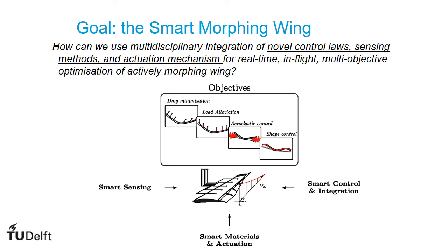The goal of this project is to advance active morphing technology for greener aviation, with Smart Autonomous Morphing Wing concept. The morphing technology is developed in the early stages of the design, such that the integration of various disciplines is closely coupled. And the main research question that we aim to answer is how to use multidisciplinary integration of novel control laws, sensing methods, and actuation mechanisms for real-time in-flight multi-objective optimization of actively morphing wing.